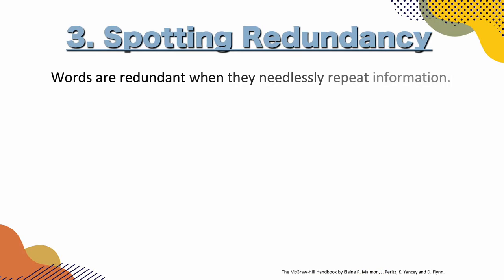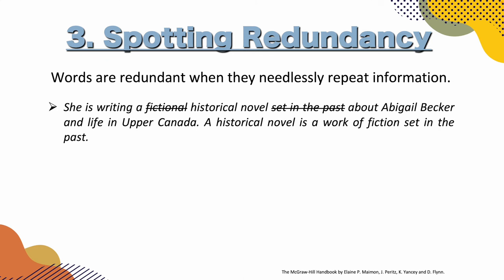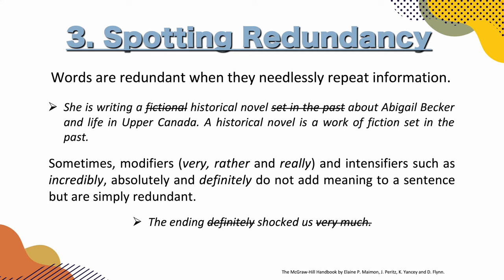Now, spotting redundancy. Words are redundant when they needlessly repeat information. For example: 'She is writing a fictional historical novel set in the past about Abigail Becker.' A historical novel is a work of fiction set in the past, so we don't need 'fictional' — it's included in 'historical novel' — and we don't need 'set in the past' either, because historical obviously means set in the past. Also, modifiers like 'rather,' 'really,' and intensifiers such as 'incredibly,' 'absolutely,' and 'definitely' do not add meaning to a sentence but are simply redundant. For example: 'The ending definitely shocked us very much' — 'shocked' already conveys that intensity, so 'definitely' and 'very much' are not needed.